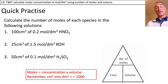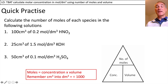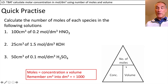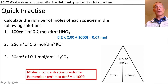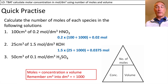Now use the equation to calculate the number of moles of each species in the following solutions. Species means the type of compound. To calculate the number of moles, that equals concentration times volume. The concentration is 0.2 moles per decimetre cubed, and the volume given in centimetres cubed must be divided by a thousand to convert to decimetres cubed. Pause the video and try the other two. You should have got 0.0375 moles and 0.005 moles.